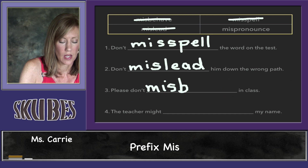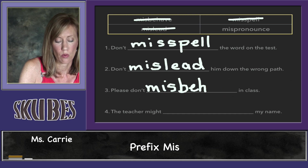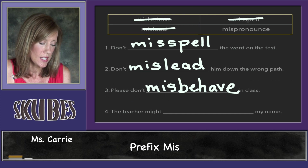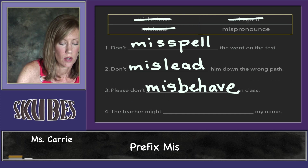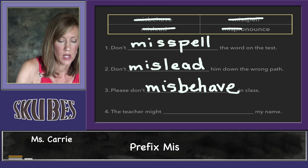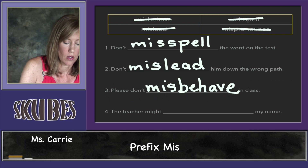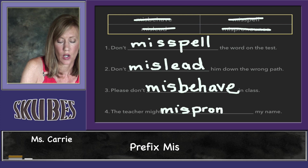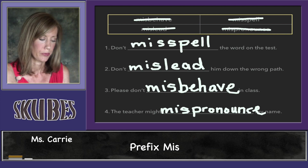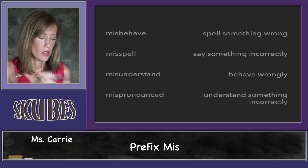Because then you would be behaving incorrectly or behaving the wrong way. And number four says: 'The teacher might blank my name.' She might mispronounce my name, and that means to pronounce or say something incorrectly, the wrong way.